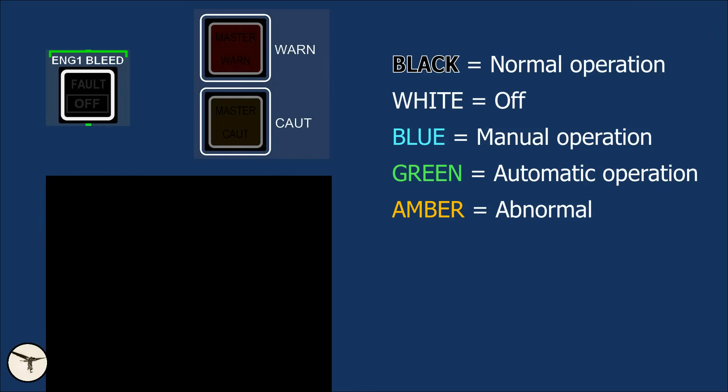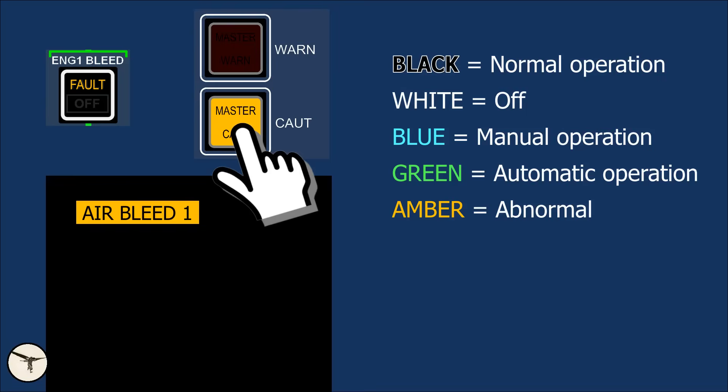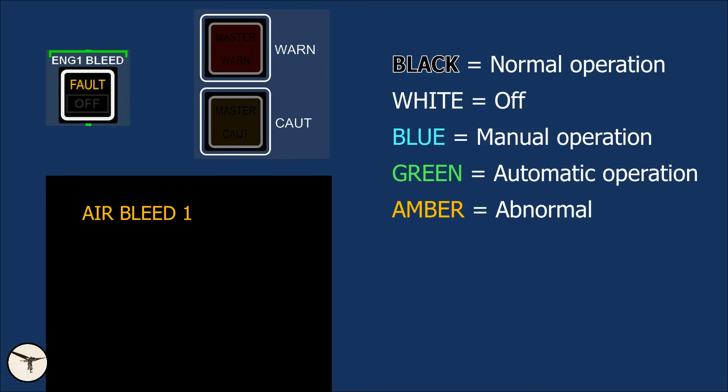When a system fails, the alert system is activated, triggering a single chime, a flashing amber master caution light, a message on the alert window, and a local fault light. The flashing light is cleared by pressing it, after which the checklist is followed.